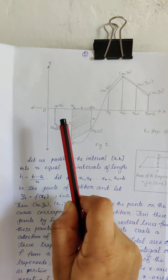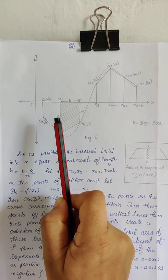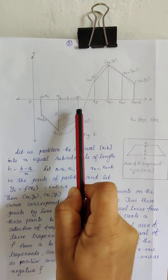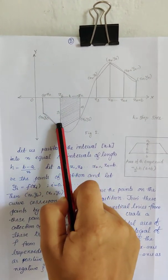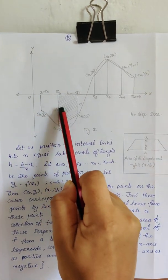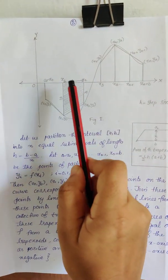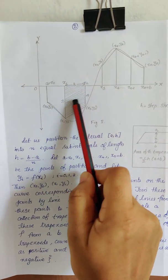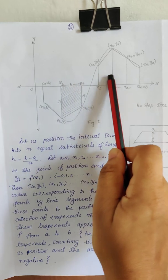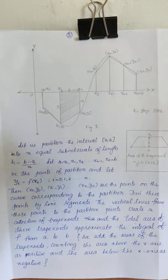And lengths of the parallel sides are y1 and y2. So what will be the area of this trapezoid? Half h into y1 plus y2. So we are adding these shaded regions in each and every trapezoid we are having.